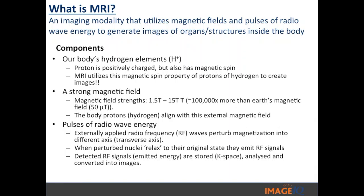So what is MRI? MRI is an imaging modality that utilizes magnetic fields and radio wave energy to generate images of organs and structures inside of the body. The first component is our body and the hydrogen elements within it — MRI uses the proton, which is positively charged and has a magnetic spin, to create images. The second component is a strong magnetic field. When we think of MRI, we think of magnetic fields on the order of 1.5 Tesla to 15 Tesla — magnets that apply fields on the order of 100,000 times greater than the Earth's magnetic field.